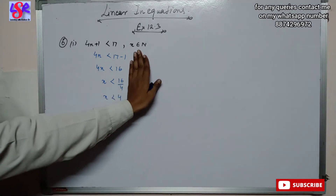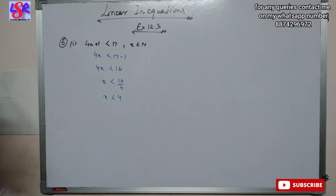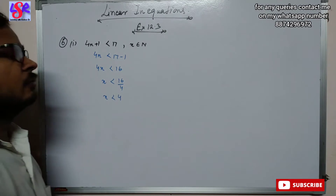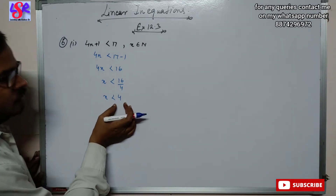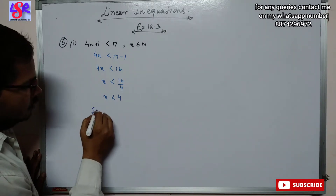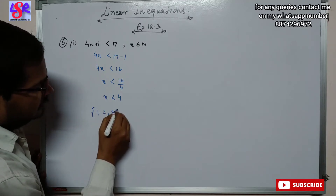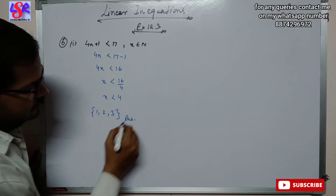Now it has been given that x is the element of natural number, and we know that natural number begins from 1. So the answer will be 1, 2 and 3.